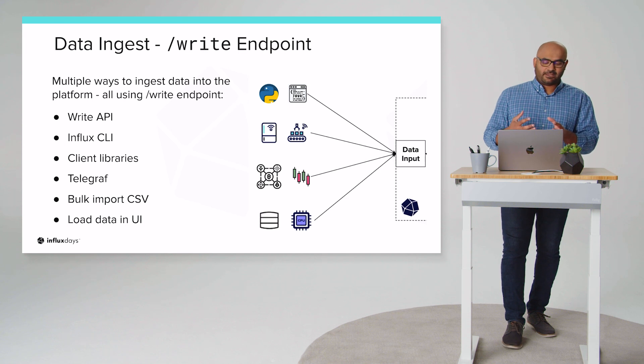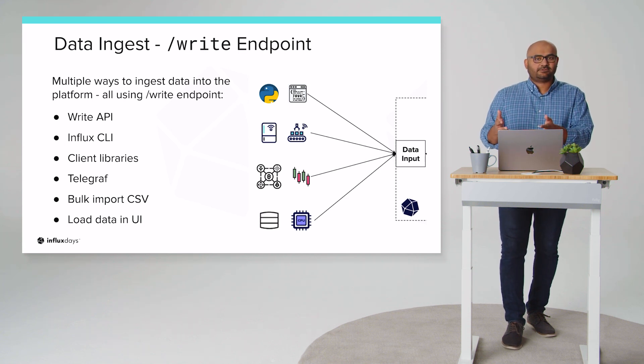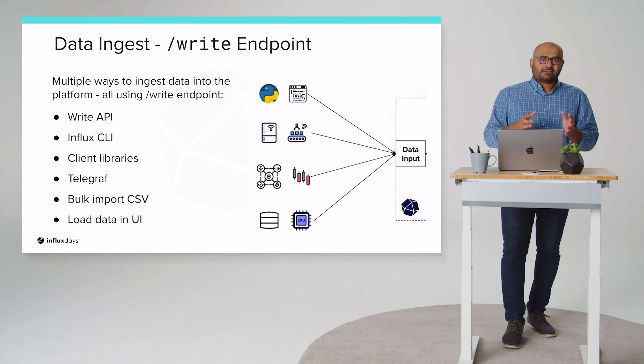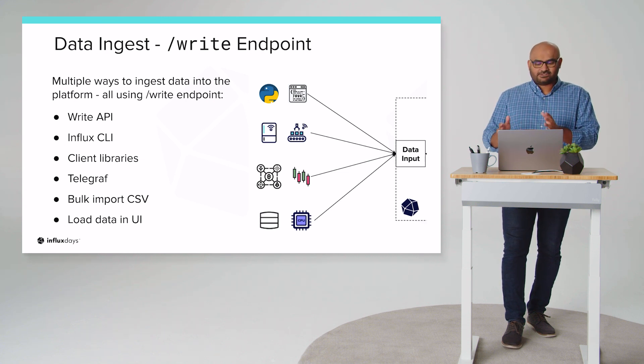Now let's think about the fictional utility company. They would use Telegraf on their smart meters to input data into InfluxDB Cloud. The Telegraf plugin would be able to read data in the format that the smart meters emit and convert that into the line protocol that InfluxDB can understand. Moreover, Telegraf can handle the intermittent connectivity issues that these meters could face in the field.